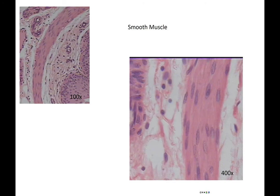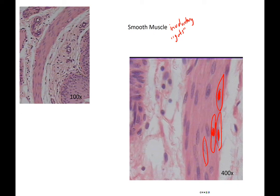The first one that I want to look at is smooth muscle. Smooth muscle is described as your involuntary muscle, or the muscle of your guts or organs. As you look at smooth muscle, you'll see that the cells are spindle-shaped, meaning they come to a point at each end, and they have a large, easy-to-see nucleus. They form a nice sheet of cells.